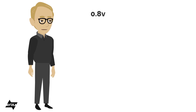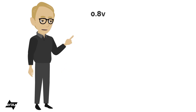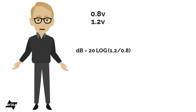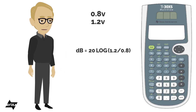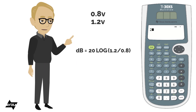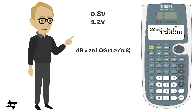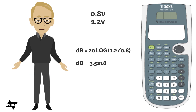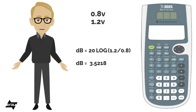Let's do one with voltage. Say I measure 0.8 volts and increase it to 1.2 volts — what's the expected increase in decibels? Since it's voltage, we use the 20 log equation. I'm expecting an increase, so the larger number goes first: 20 × log(1.2 / 0.8), close the parenthesis. The difference in decibels between those two voltage levels is approximately 3.5 dB. Going from 0.8 V up to 1.2 V gives about a 3.5 dB increase.